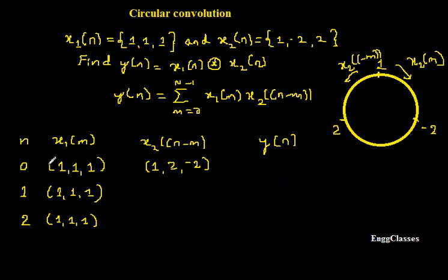So how do I get y(n)? Whatever I have now x1(m), x2(m), I need to multiply them. I need to summation, means I have to multiply and add all the sequences. First I multiply 1 with 1 which is 1. Next I multiply 1 with 2, it is 2. Next it is 1 into -2, it is -2. So what is the answer? It is going to be 1. This is the first sample.